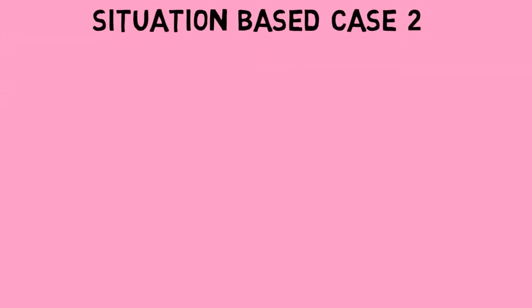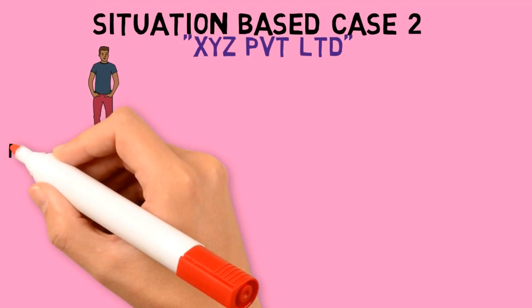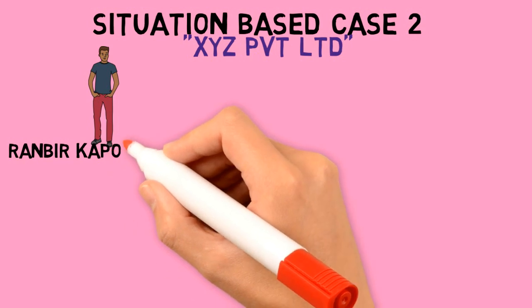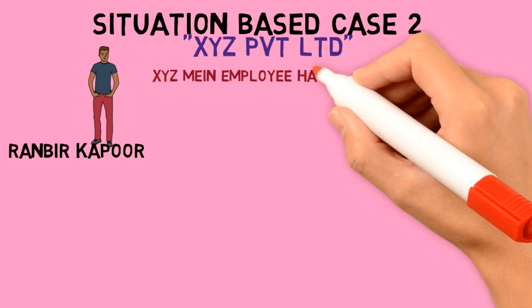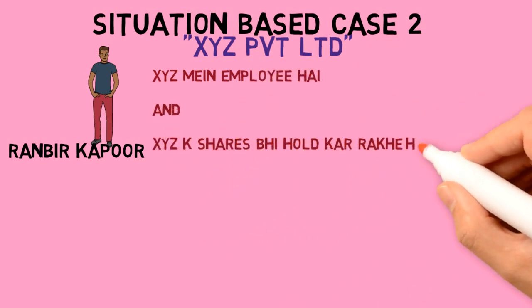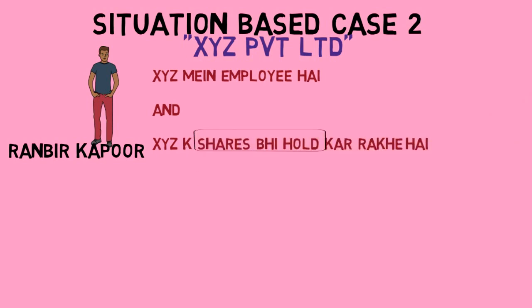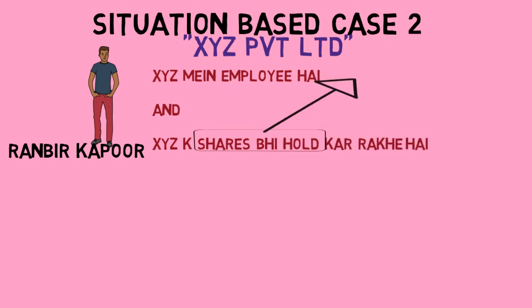Next is situation-based case 2. Say, for example, this is XYZ Private Limited, and Ranbir Kapoor is an employee of XYZ Private Limited and also holds shares of XYZ Private Limited. As he holds the shares of the private company, he should be counted as a member. But he is not counted as a member of XYZ Private Limited. Why? Because he is an employee of XYZ Private Limited.